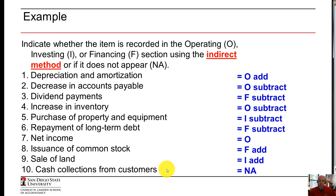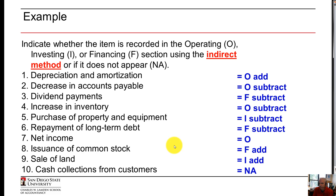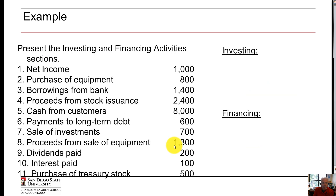Cash collections from customers are not reported in the operating, investing, or financing sections under the indirect method. Cash collections are not reported under the indirect method. If this were the direct method, we would report cash collections from customers and cash payments to suppliers. But under the indirect method, we take the changes in current assets and current liabilities year over year. Now let's present the investing and financing activities sections.